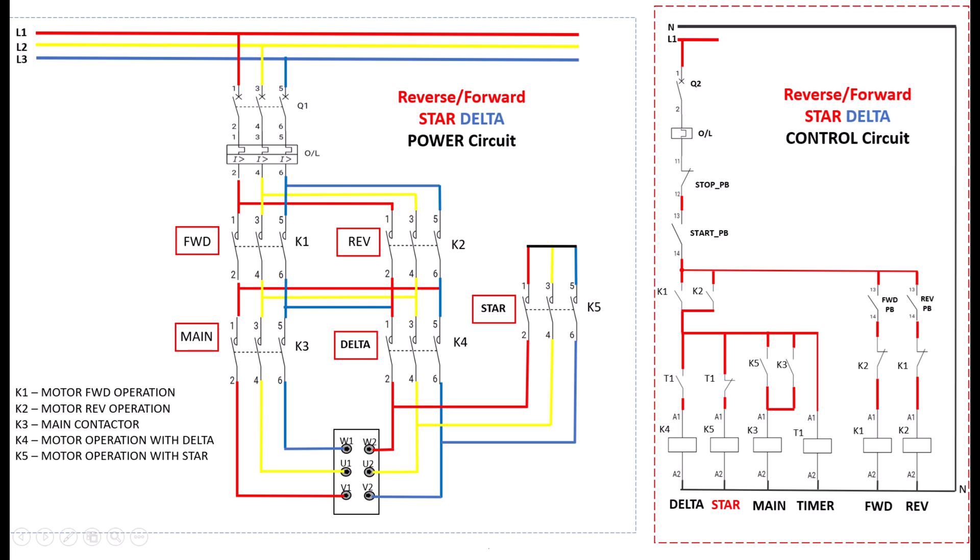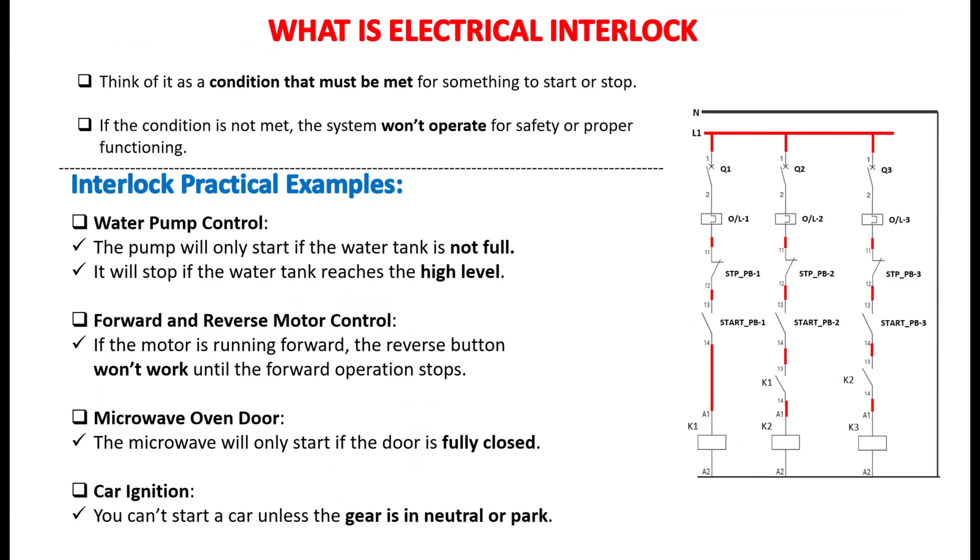Let's move to the electrical interlock. Let's talk about electrical interlocks. Think of an interlock as a rule that says something can only happen if certain conditions are met. If those conditions are not met, the system will not work. This helps keep things safe and makes sure everything works properly. I'm not going into the circuit just yet, but let me first give you some real-life examples that will help you understand electrical interlocks.